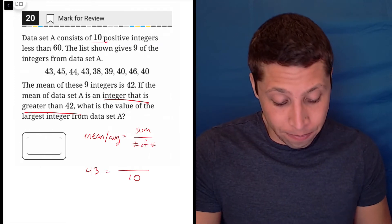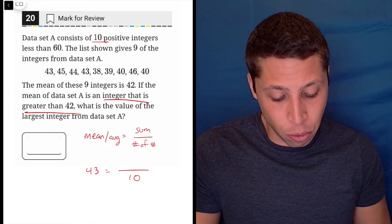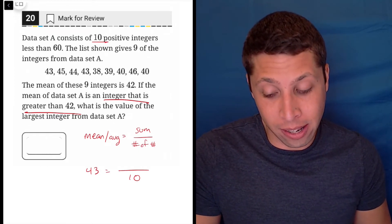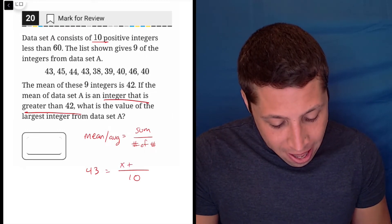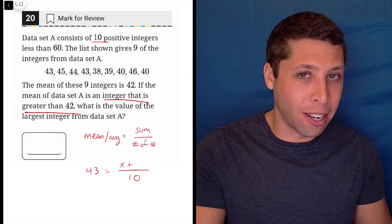We know nine of them, but we don't know a missing one. So what we can do is we can solve for an X that is added into the nine integers that we have.